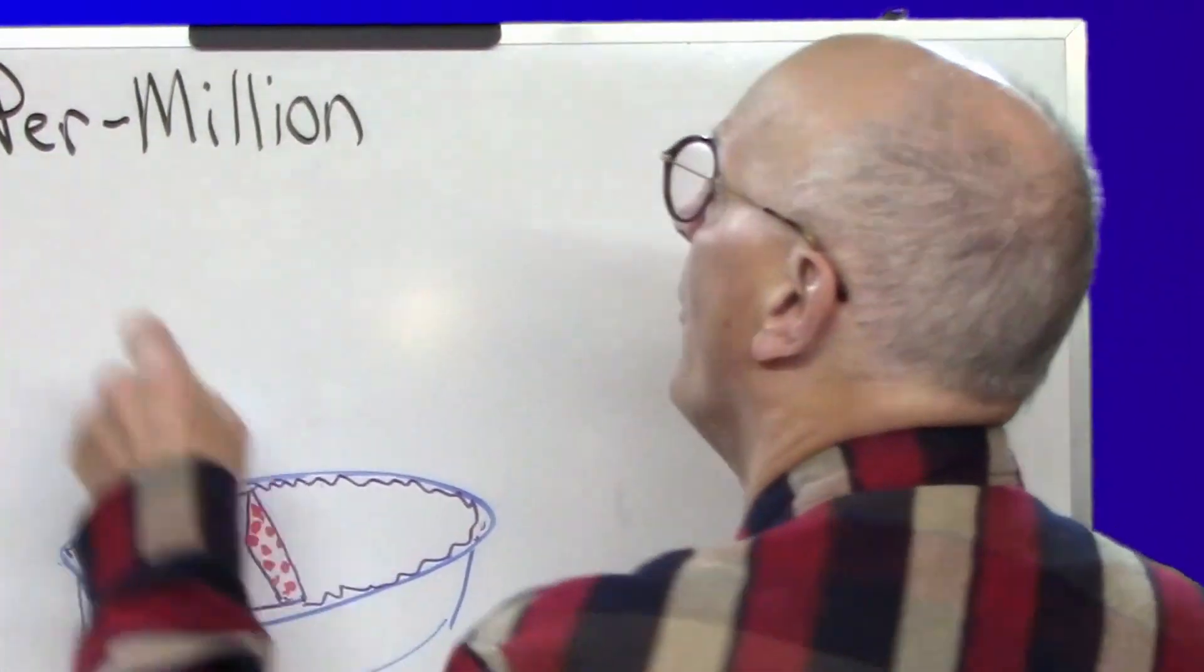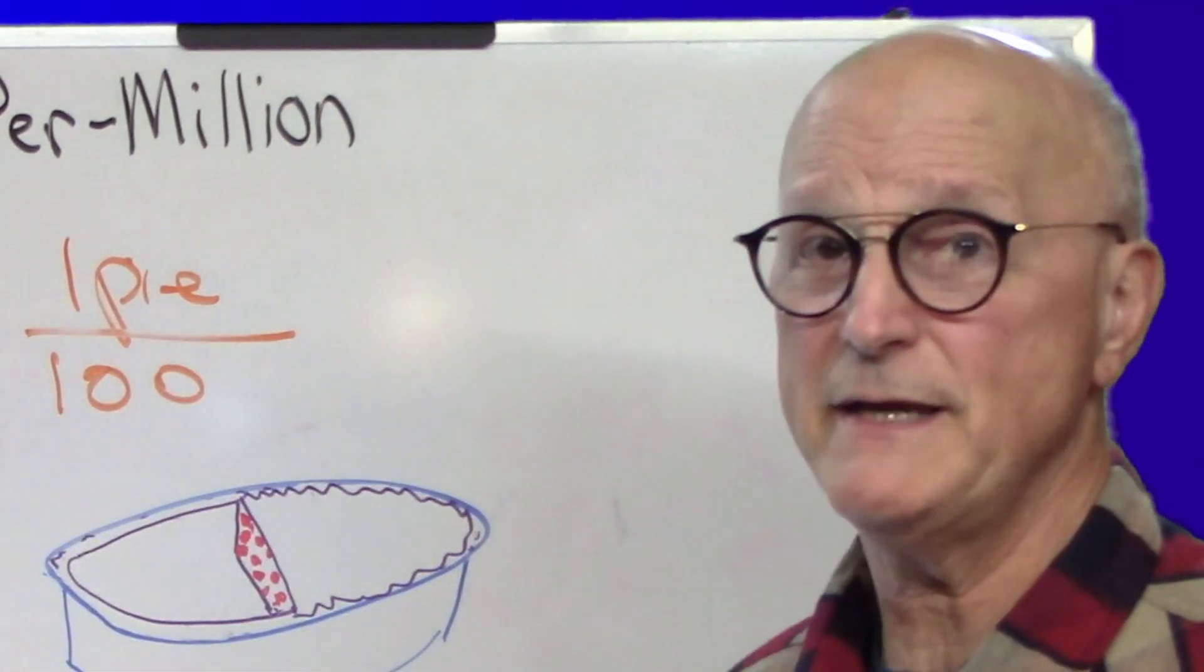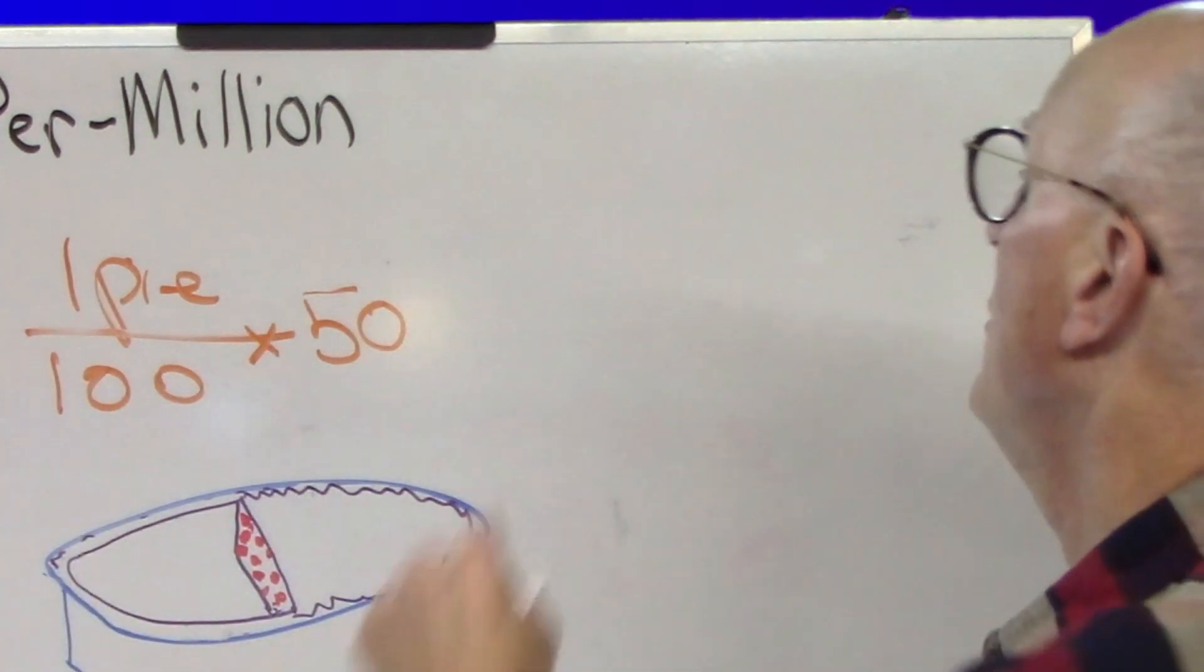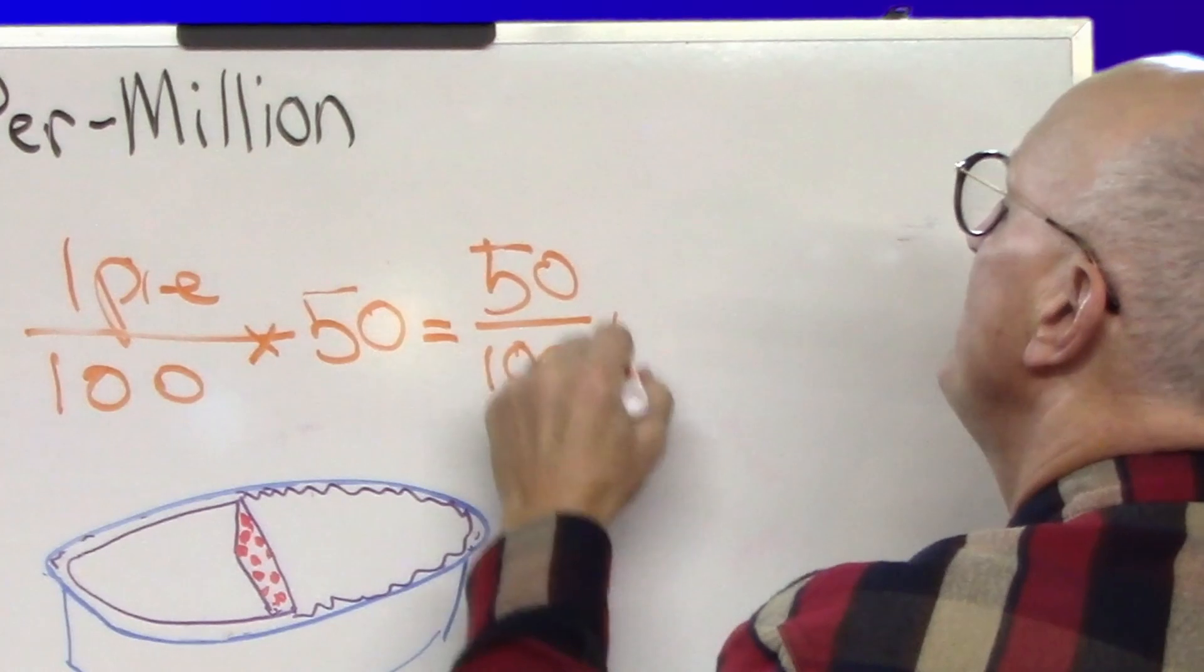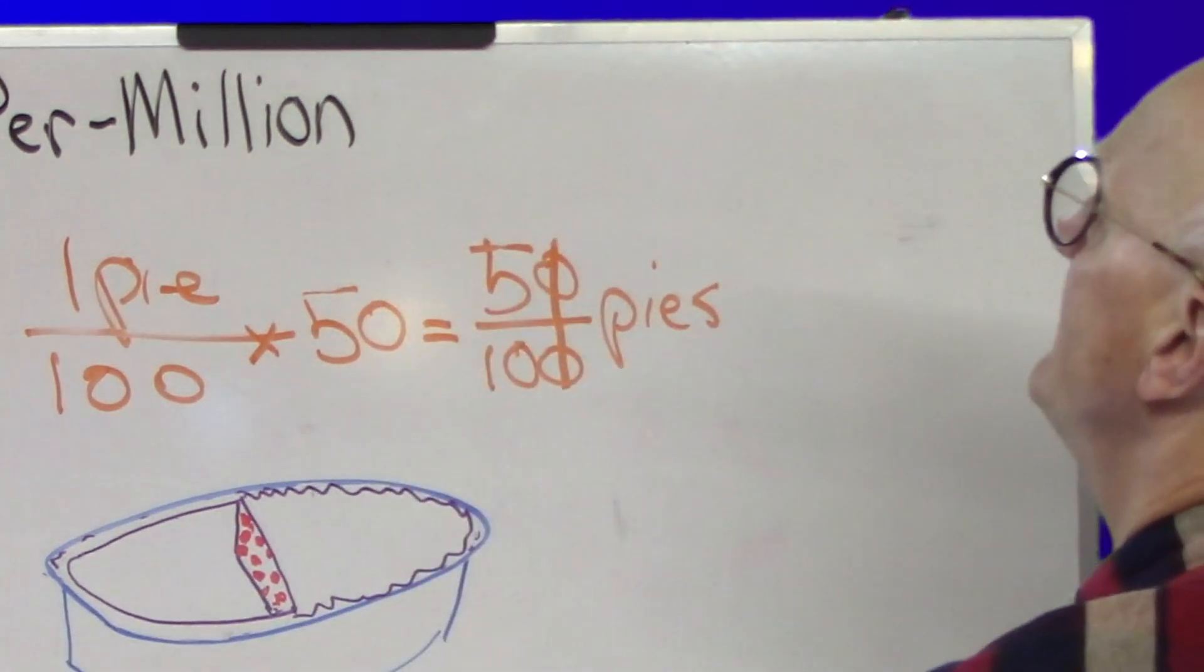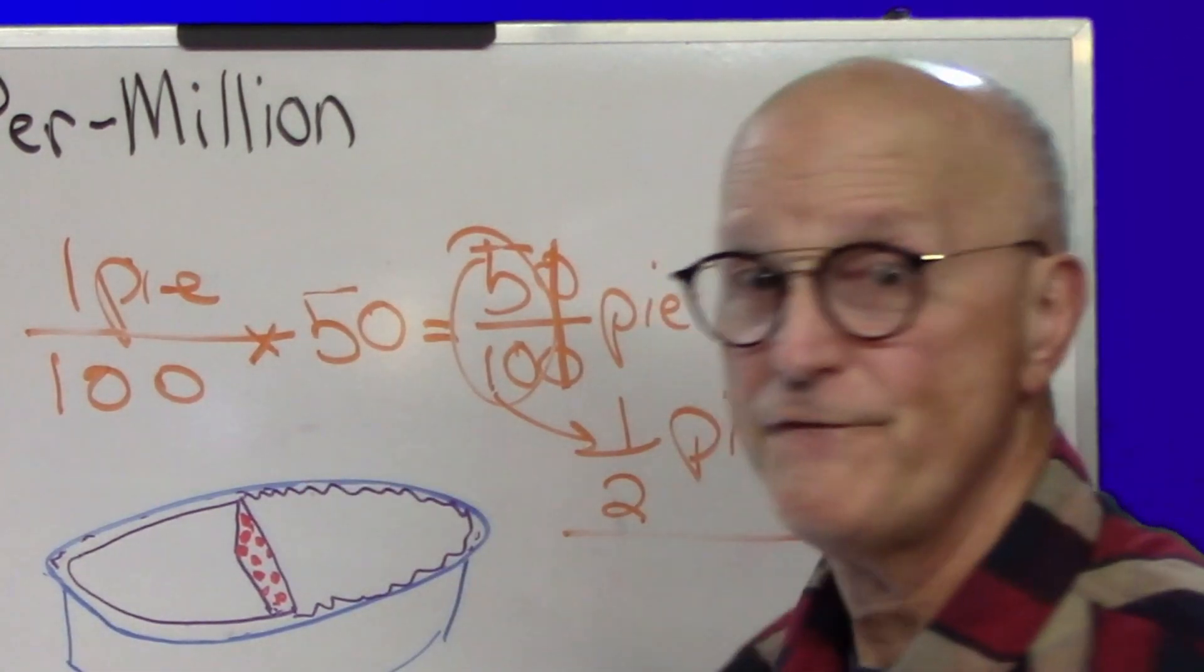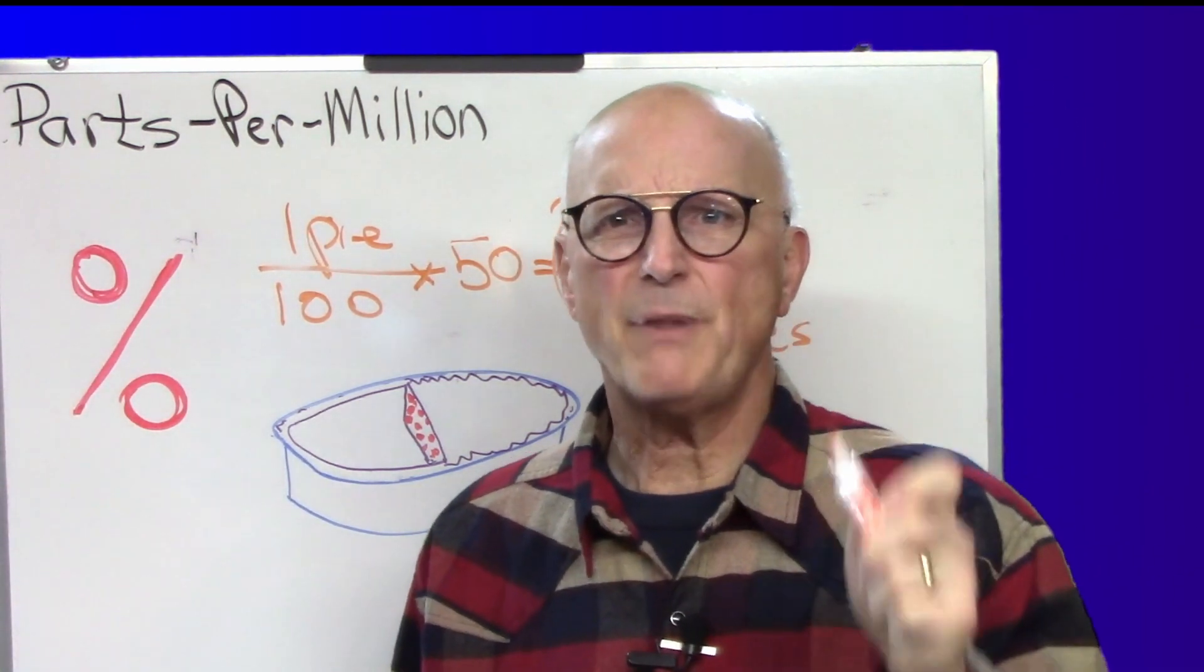We have 1 pie divided by 100. That's how big each individual piece is. And then I ate 50 of them, which is how many of these 1/100th of a pie I ate. We would end up with 50 over 100 pies that I ate. 50 over 100 is the same thing as 5 over 10. And 5 over 10 is 1 half. So I would have eaten 1 half pies if I ate 50%. So a percentage is nothing more than parts per 100.